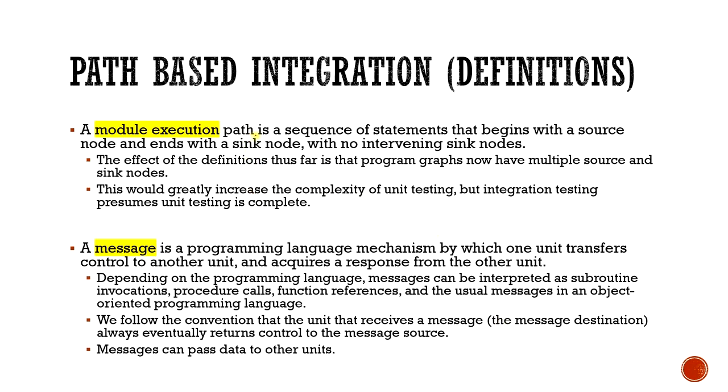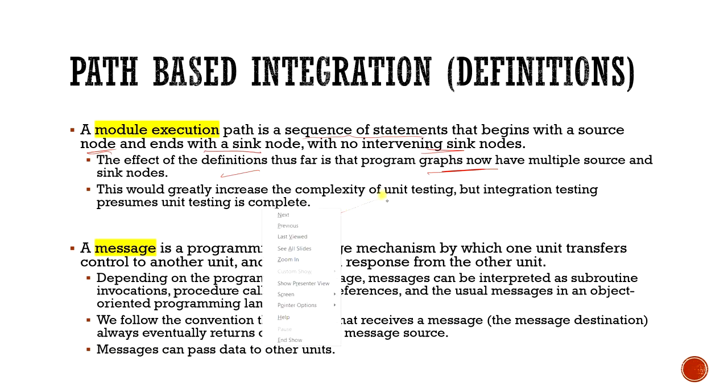A module execution path is a sequence of statements that begins with a source node and ends with a sink node with no intervening sink nodes. The effect of these definitions thus far is that program graphs now have multiple source and multiple sink nodes. This would greatly increase the complexity of unit testing, but integration testing presumes unit testing is complete.